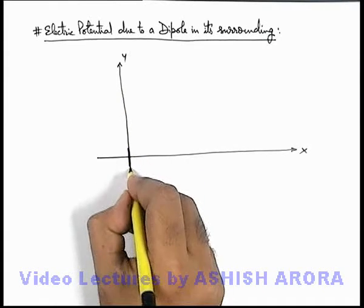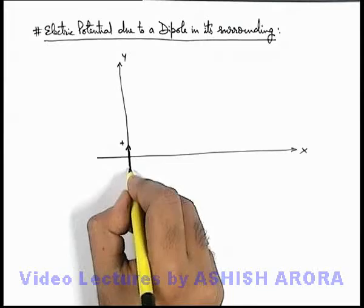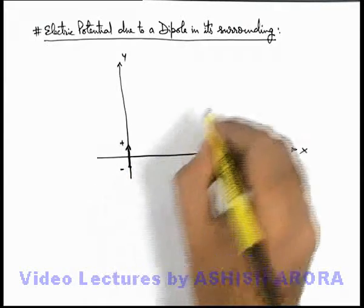Say here we have placed a dipole along the y-axis. This is the positive end of dipole, this is the negative end of the dipole.